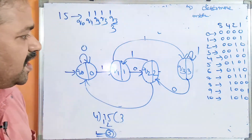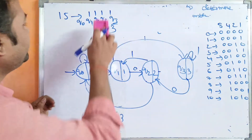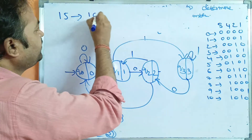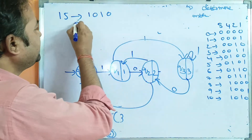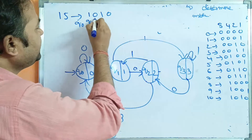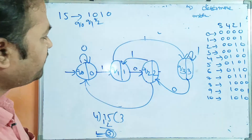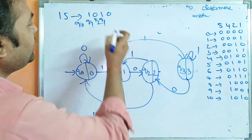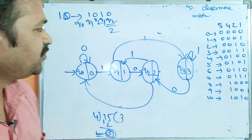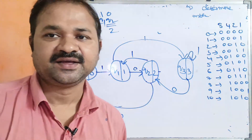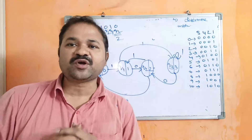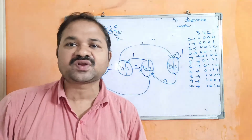Let us check one more example with string 1010, which equals 10. 10 modulo 4 is 2, so we need Q2. Q0 on 1 → Q1, Q1 on 0 → Q2, Q2 on 1 → Q1, Q1 on 0 → Q2. Output of Q2 is 2, which is exactly 10 modulo 4. So this Moore machine is correct. In this way we can design a Moore machine to determine residue modulo 4 for any binary string.